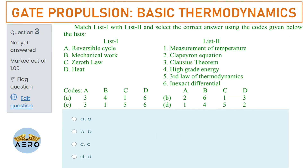Next question: match the following. In List 1 we have reverse cycle, mechanical work, zeroth law, and heat. In List 2 we have measurements of temperature, Clapeyron equations, Clausius theorem, high grade energy, third law of thermodynamics, and inexact differential.